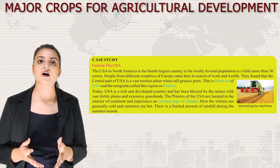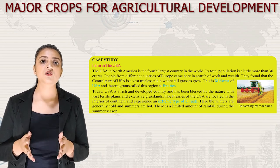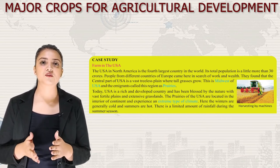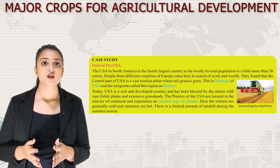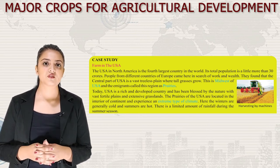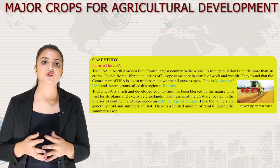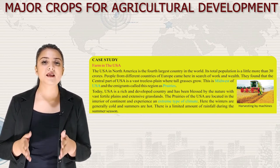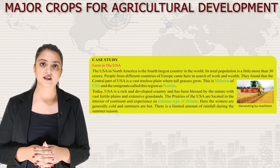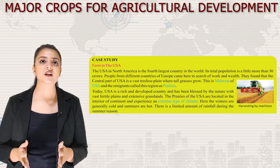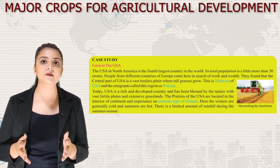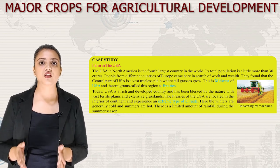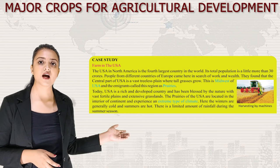Now let's dive into a case study about a farm in the USA. The USA in North America is the fourth largest country in the world, with a population of a little more than 30 crores. The central part of the USA is a vast treeless plain — the Midwest — called the prairies. The USA has been blessed with vast fertile plains and extensive grasslands. The prairies experience an extreme climate with cold winters, hot summers and limited rainfall.